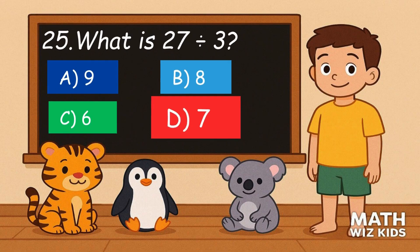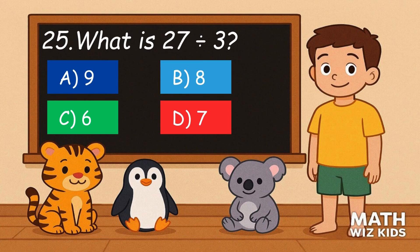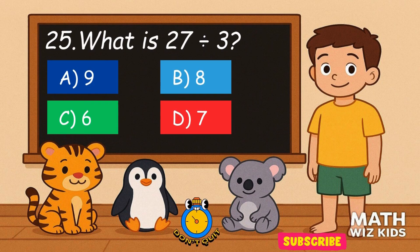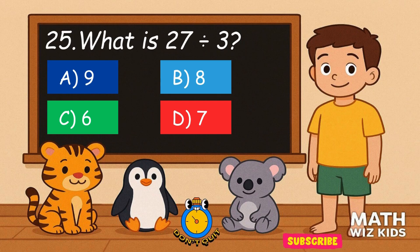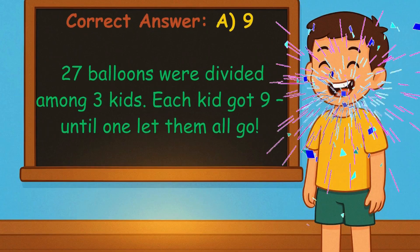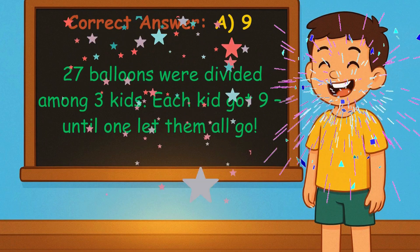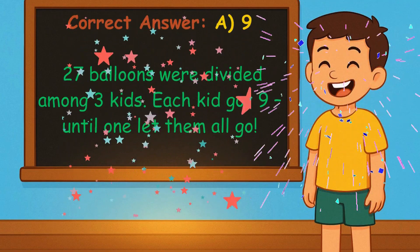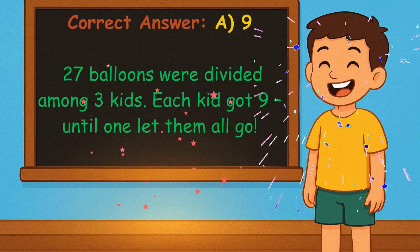25. What is 27 divided by 3? Is it A, 9, B, 8, C, 6, or D, 7? Correct answer is 9. 27 balloons were divided among 3 kids. Each kid got 9. Until 1 let them all go.